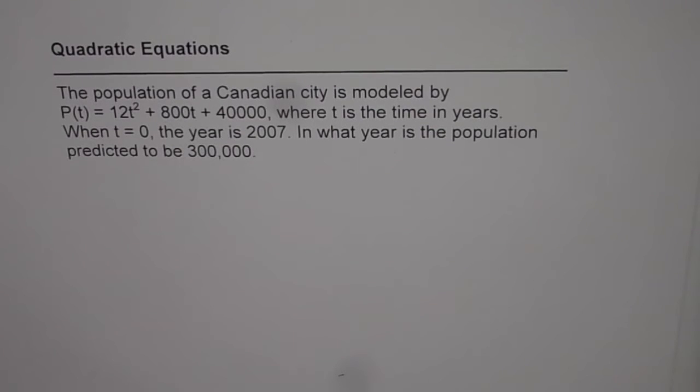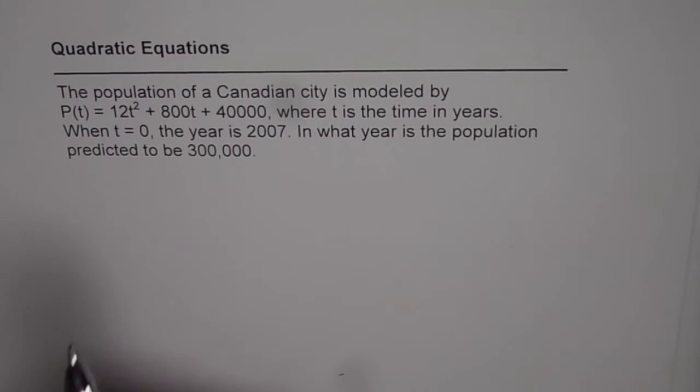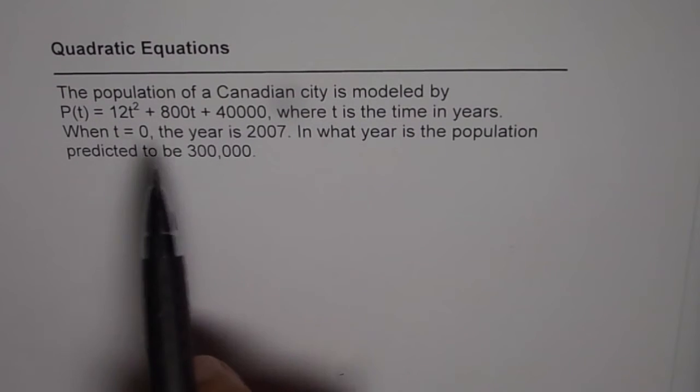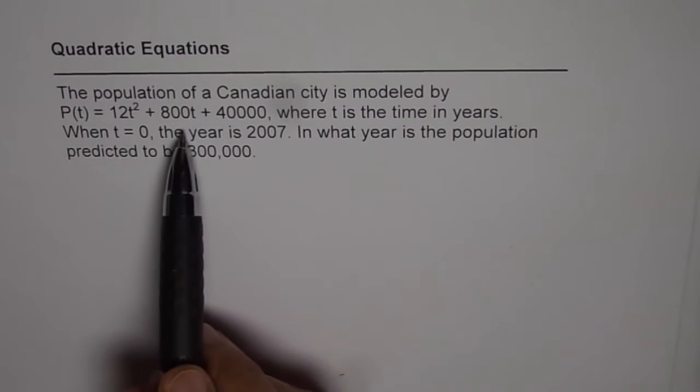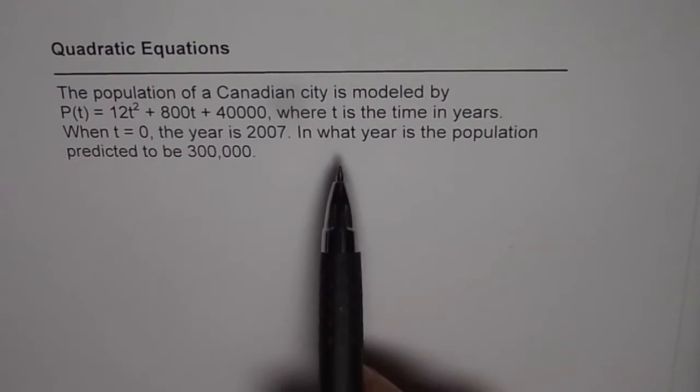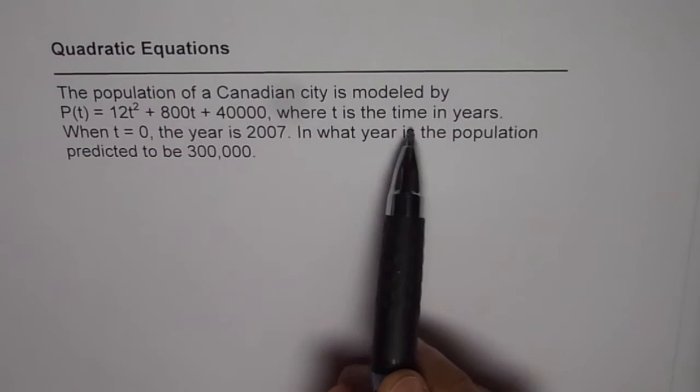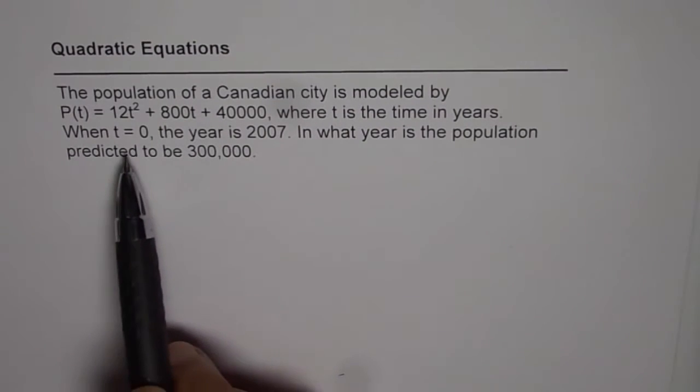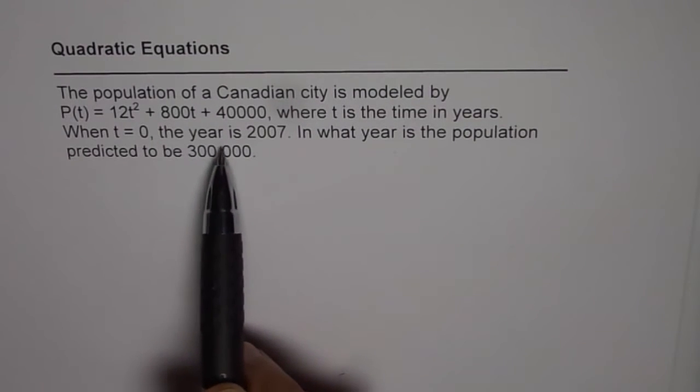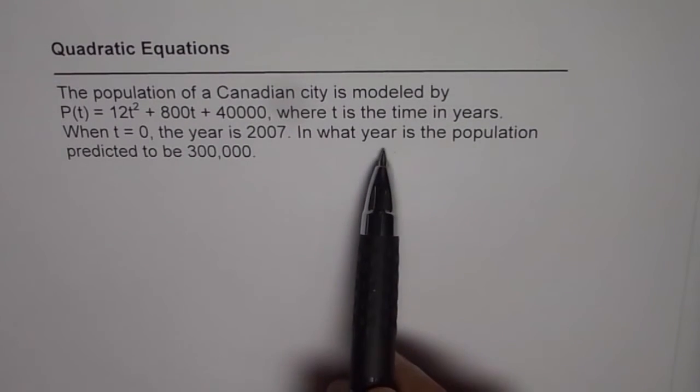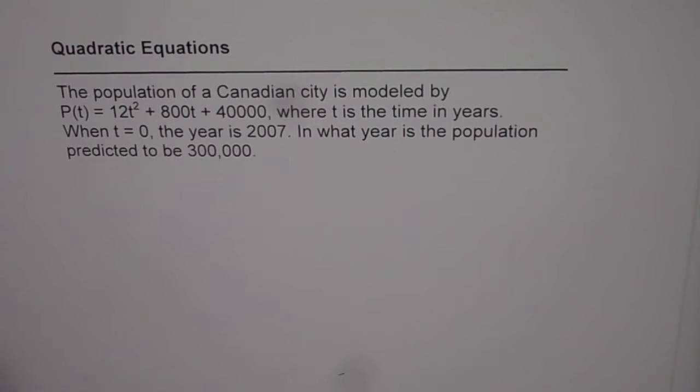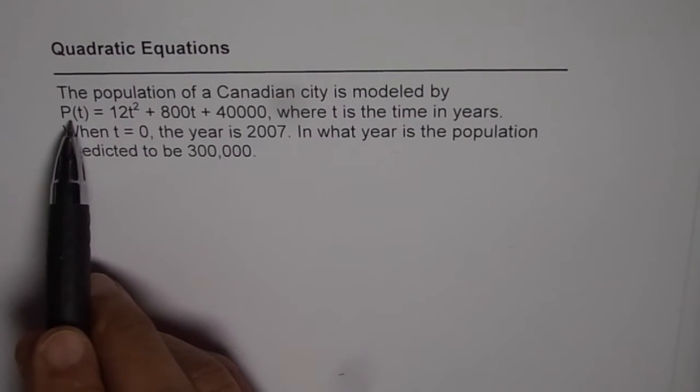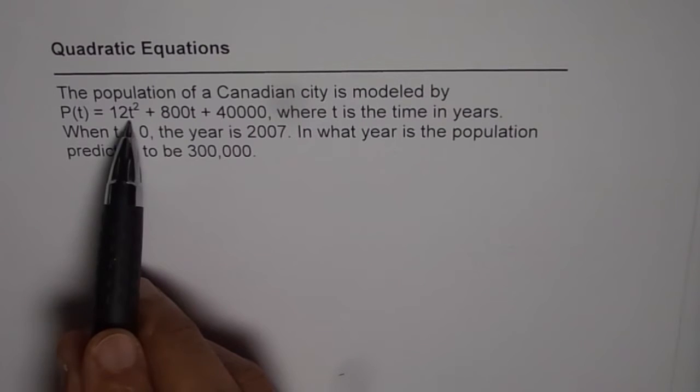I am Anil Kumar and here is an example of application of quadratic equation. The question is: the population of a Canadian city is modeled by P(t) = 12t² + 800t + 40,000, where t is the time in years. When t = 0, the year is 2007. In what year is the population predicted to be 300,000? So that means we know the final population and we need to find time t.